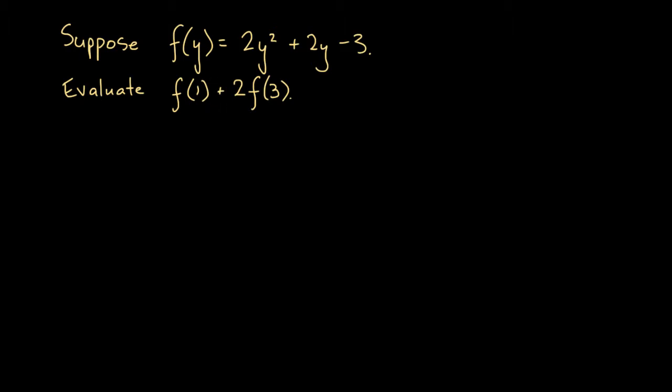So the best way to go about this is to consider what this statement means. When it says evaluate, it's asking us to find the value of f of 1, which is some numerical value, and substitute that actual number. It's also asking us to find f of 3, and when we substitute these two numbers in, we'll get something plus 2 times something else, and we can evaluate that expression to get the final answer.